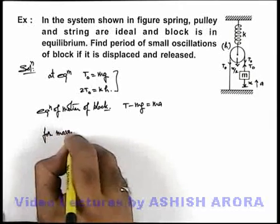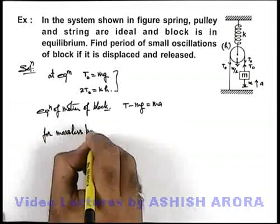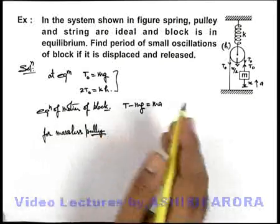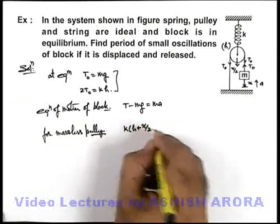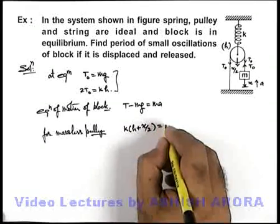For massless pulley, as always the sum of forces on pulley will be zero, we can write k(h + x/2) will be equal to 2T.